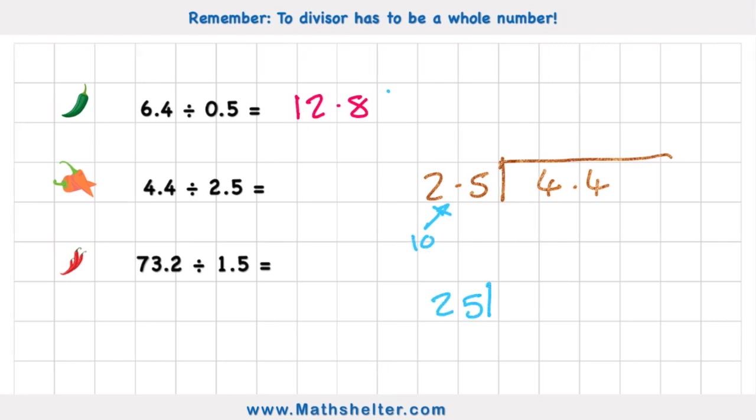Now if I'm multiplying the divisor by 10 I also have to multiply the dividend by 10 and 4.4 times 10 is 40. So now I have a 2 digit divisor but that doesn't make it any harder. We can just simply work out how many 25's are there in 4? 0. Carry the 4 across. How many 25's are there in 44? Well there's 1 and 19 left over.